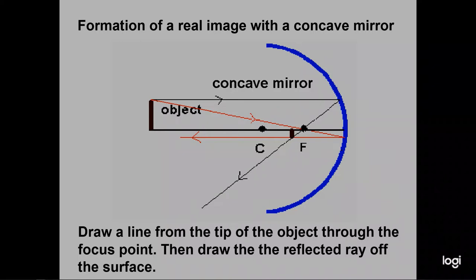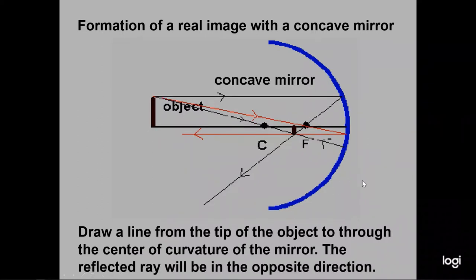Parallel before, focus point after. Focus point before, parallel after. There's a third ray that goes through the center of the mirror — because it hits normal to the surface, it gets reflected straight back. All three rays intersect at the same point — that's how you find the image. Of course, you have to draw to scale. There's also a fourth ray that hits the vertex of the mirror; the incident angle and reflected angle are equal. When you draw ray tracings, make sure you draw arrows to indicate the direction of the rays.